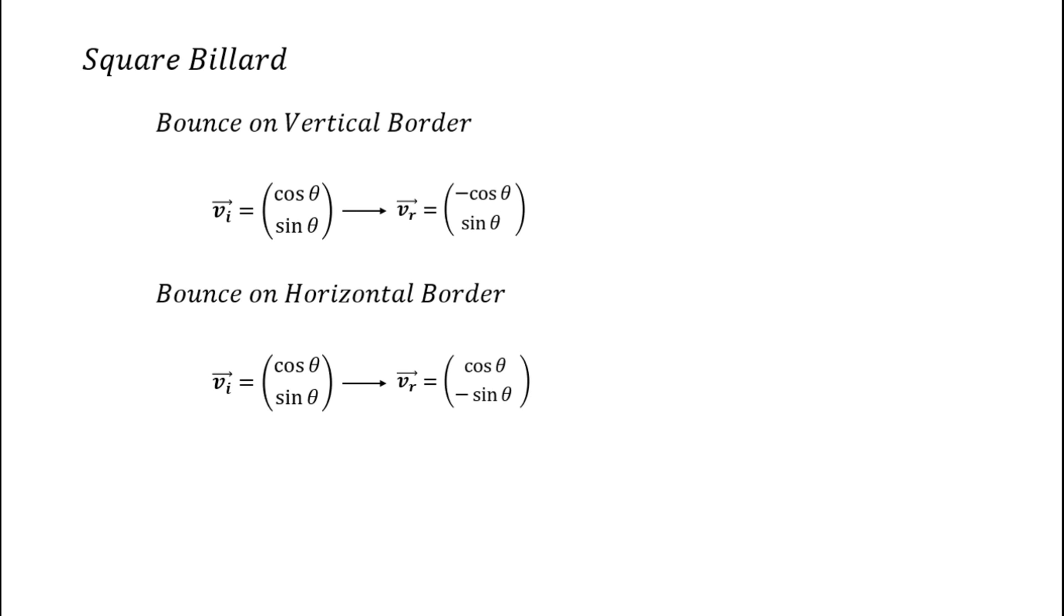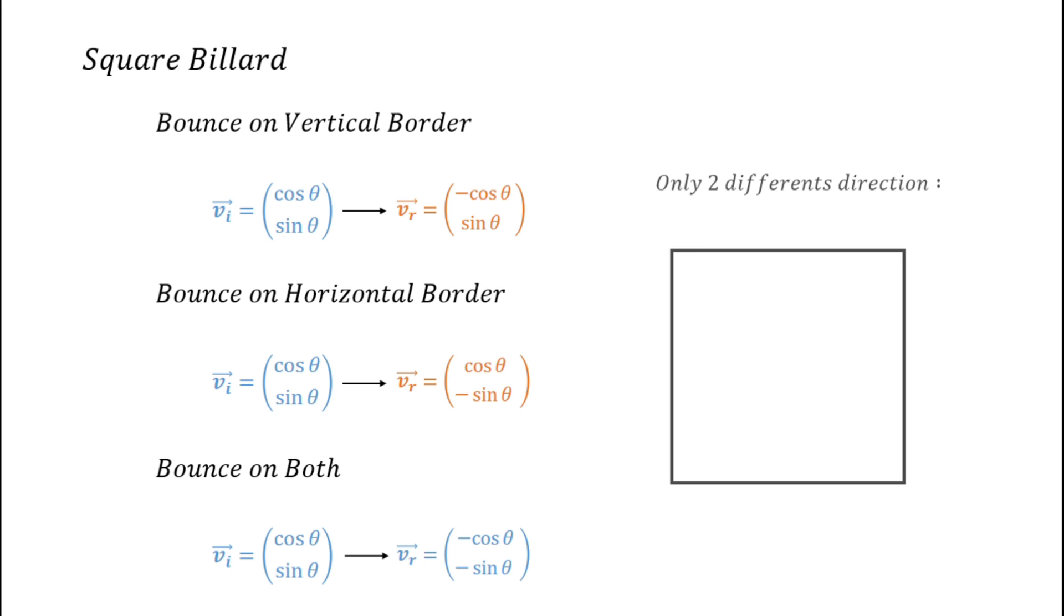Let's summarize all of this. We have seen the vertical border reflection, the horizontal border, and we can deduce reflection on both sides. So here are all the orientations that can be made by a ball hit at an angle of theta. If you look close enough, there is actually only two different directions, since everything else is equivalent up to a factor of minus one. So this means there can be only two directions of trajectory.